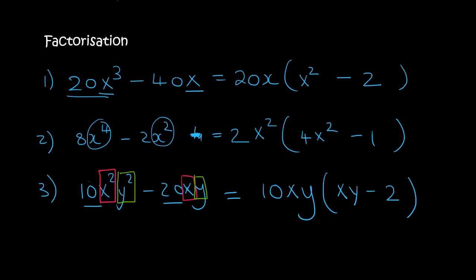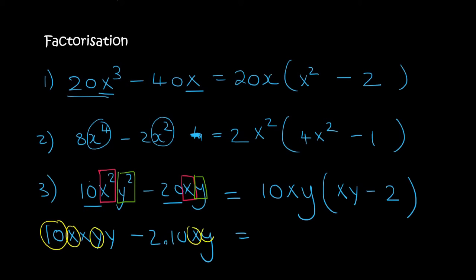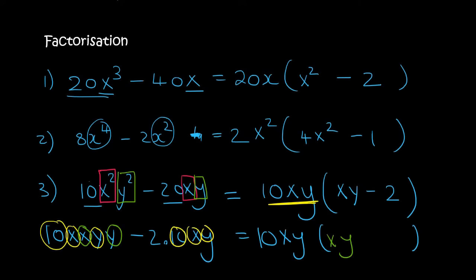Let me show you that in a different way. This technique I'm going to show you now I wouldn't advise using all the time because it takes quite long. But 10x²y² can be written as 10·x·x·y·y, and 20xy is 2·10·x·y. What things are in common? There's a 10, they both have an x, and they both have a y. So that is why we take out 10xy. What is left? In the first term we still have an x and a y, so we say xy. In the second term we took out that 10, so we still have minus 2 left over.